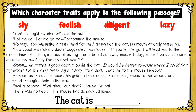Let's read another passage. 'Yes, I caught my dinner,' said the cat. 'Let me go! Let me go now!' screamed the mouse. 'No way. You will make a tasty meal for me,' answered the cat, his mouth already watering. 'How about we make a deal,' suggested the mouse. 'If you let me go, I will lead you to the mouse hideout. Then, instead of eating one little old scrawny mouse today, you will be able to dine on a mouse each day for the next month.'